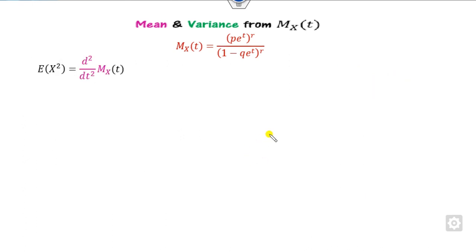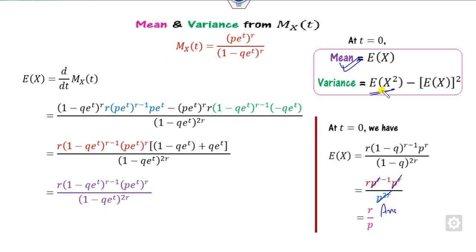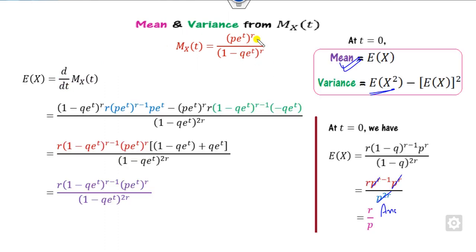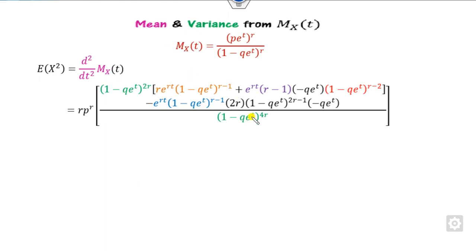Similarly you can find the variance. To find the variance you need E[X²], which requires the second derivative of the MGF. Instead of taking the second derivative from scratch, you take the derivative of the first derivative expression again using the u over v rule. When you take the denominator squared, it becomes power 4, giving the full expression for the second derivative.